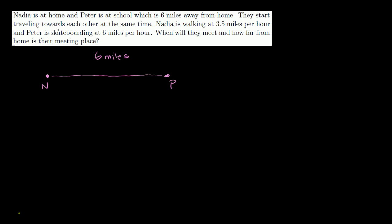They start traveling toward each other at the same time. Nadia is walking at 3½ miles per hour in that direction, and Peter is skateboarding at six miles per hour in the opposite direction. When will they meet, and how far from home is their meeting place?